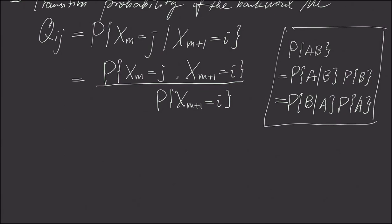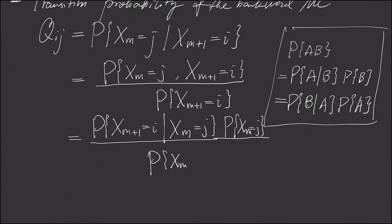And now we apply this formula on top. And what happens is instead of a conditional on this m+1 here, we condition on x_m. But now we have to then times x_m is j and divided by x_m+1 is i. So here we use the formula.